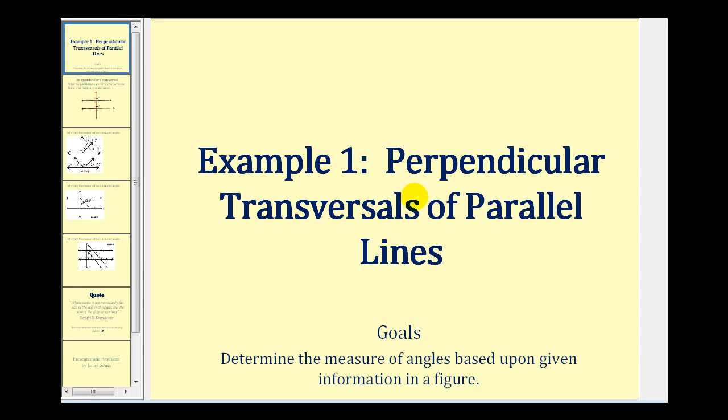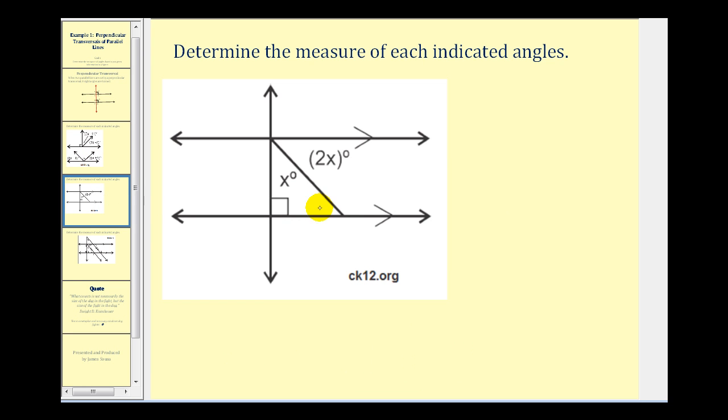Welcome to the first example of using the properties of a perpendicular transversal of parallel lines to determine the measure of angles. Let's take a look at our first figure. Here we have two parallel lines cut by a transversal and we're given that it forms a right angle with the second parallel line.